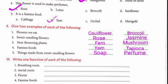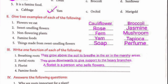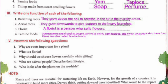Question number 3: Write one function of each of the following. First, breathing roots: they grow above the soil to breathe in the air in the marshy areas. Second, aerial roots: they grow downwards to give support to the heavy branches. Third, florist: a florist is a person who sells flowers. Fourth, famine foods: during famine and droughts, people survive by eating yam, tapioca, and sweet potatoes, and so these food items are called famine foods.